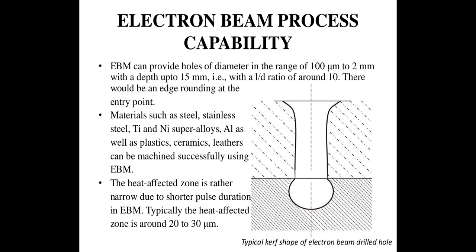EBM can provide holes of diameter in the range of 100 microns to 2 mm with a depth up to 15 mm, giving a depth-to-diameter ratio of around 10. There would be edge rounding at the entry point, as shown in the diagram of a typical EBM-drilled hole. Metals such as steel, stainless steel, titanium, nickel superalloys, and aluminum, as well as plastics, ceramics, and leather, can be machined successfully using EBM. The heat-affected zone is rather narrow due to the shorter pulse duration — typically around 20 to 30 microns.